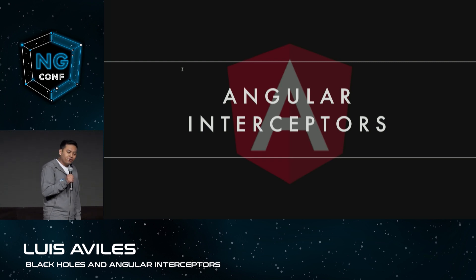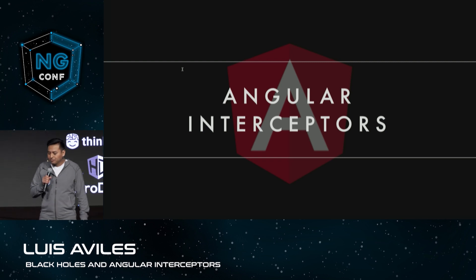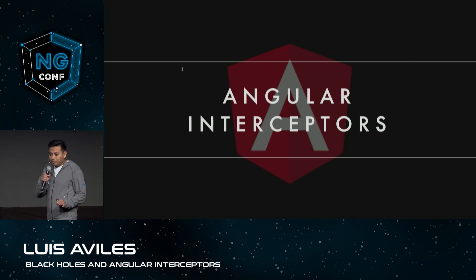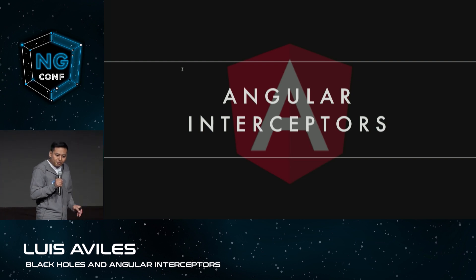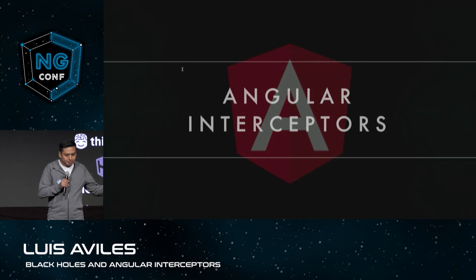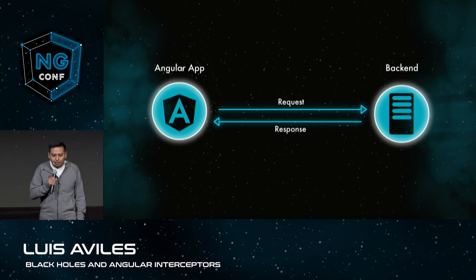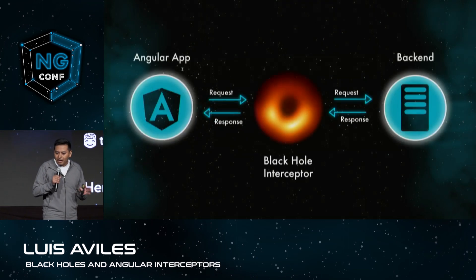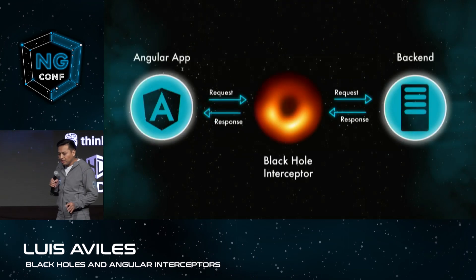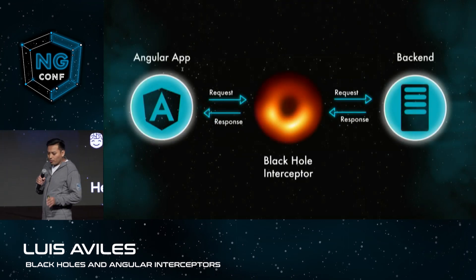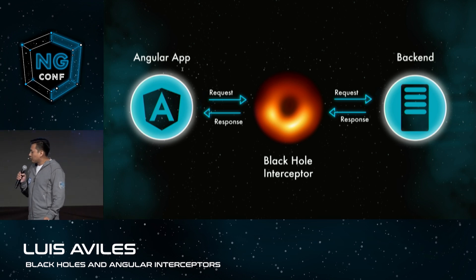HTTP interceptors is a major feature of the Angular framework. They provide a way to inspect and transform HTTP requests from the application to the server. Let's suppose we have an Angular application that needs to send an access token to the server. To solve this problem, we can have a black hole interceptor in the middle so that we can catch all outgoing HTTP requests from the application and add the access token to them.